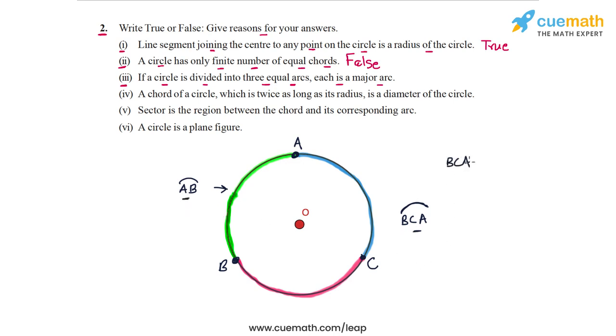So arc BCA will have a length greater than arc AB, because BCA is two of these arcs put together. And we also know that arc AB plus arc BCA gives us a full circle. So this means that if arc BCA is greater than arc AB, then BCA has to be the major arc, and which means that AB has to be the minor arc. So arc AB must be the minor arc.